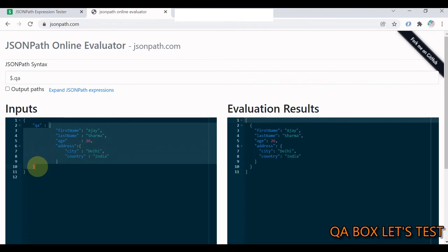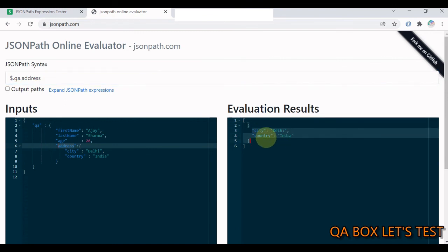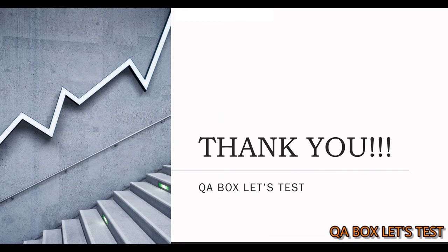Now you see this particular data. Then you need to access address. So you say dot address. There you go. So now we have this information. What do we want? We want country. So again we say dot country and there you go. So this is how we design JSON path queries or expressions and access properties from a JSON dictionary.